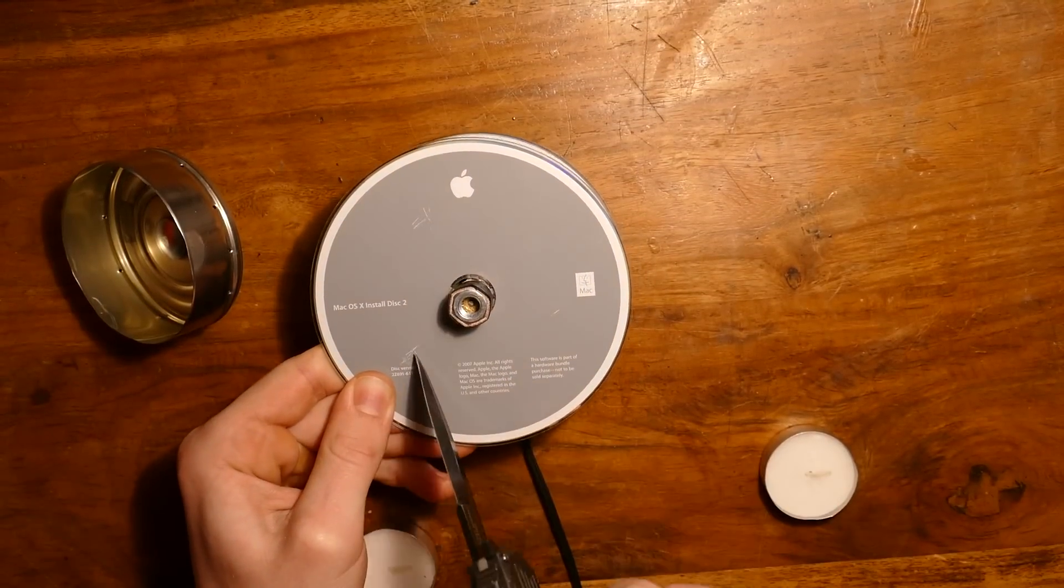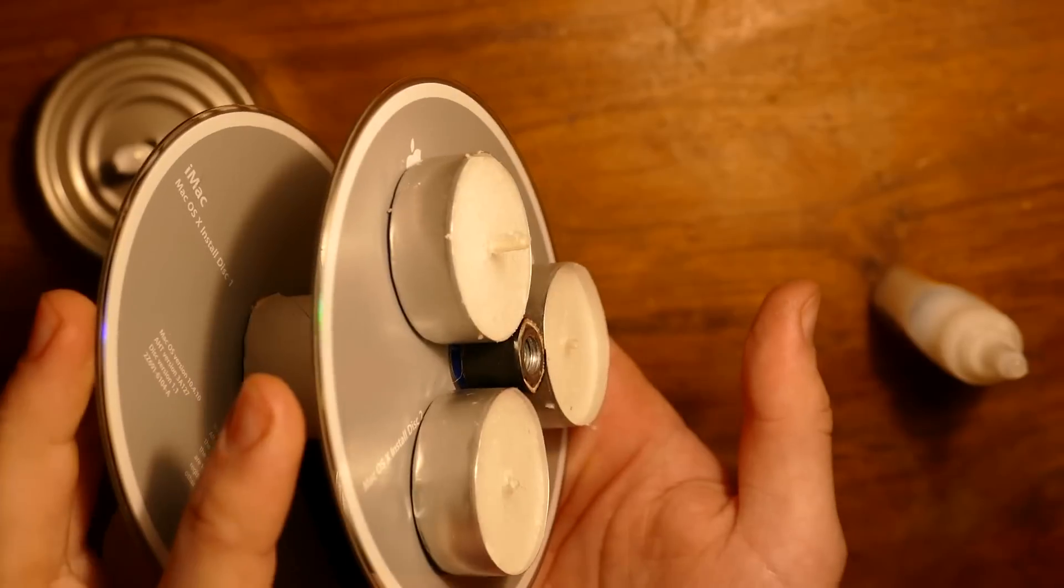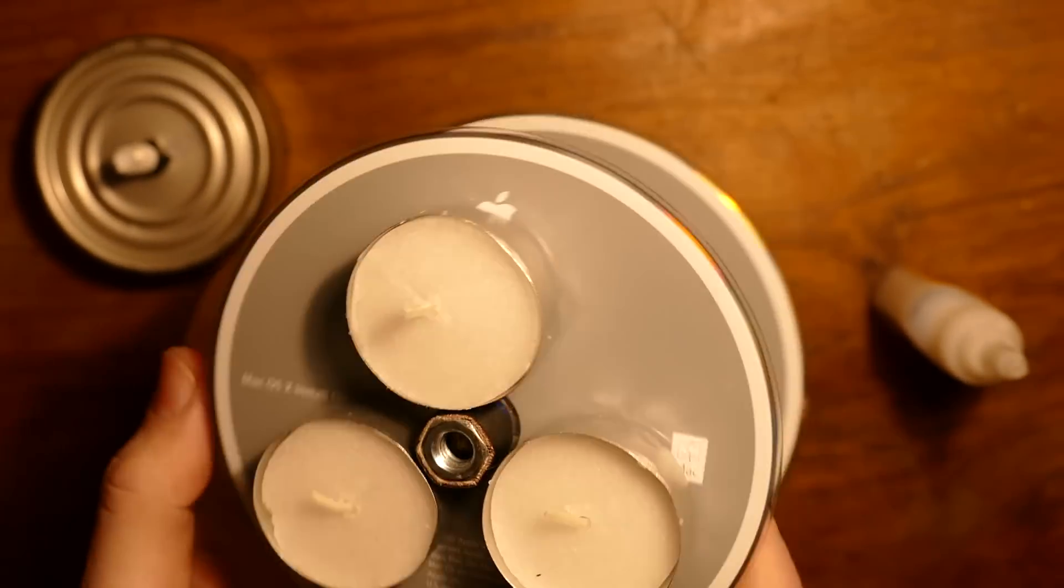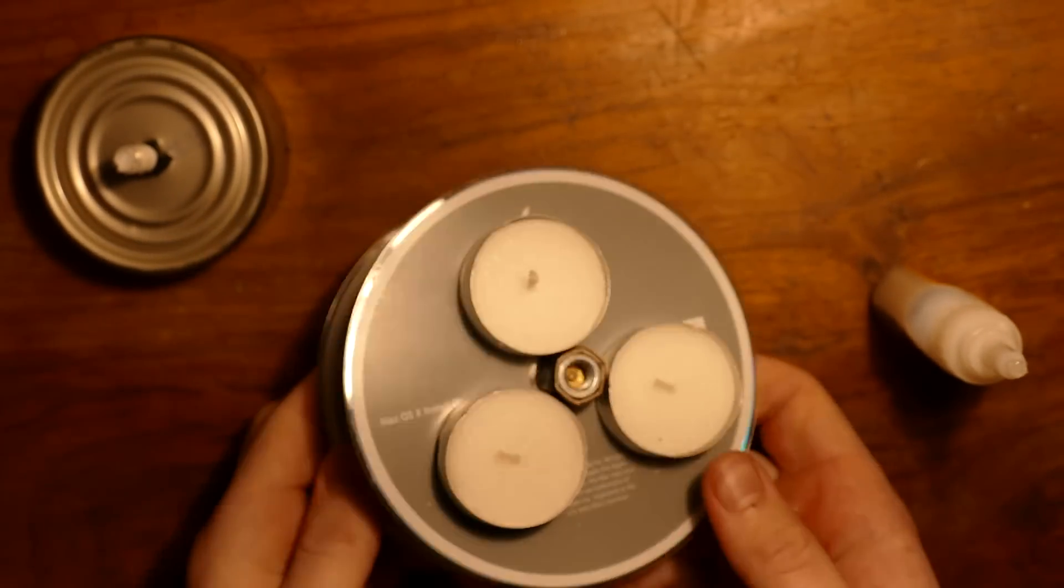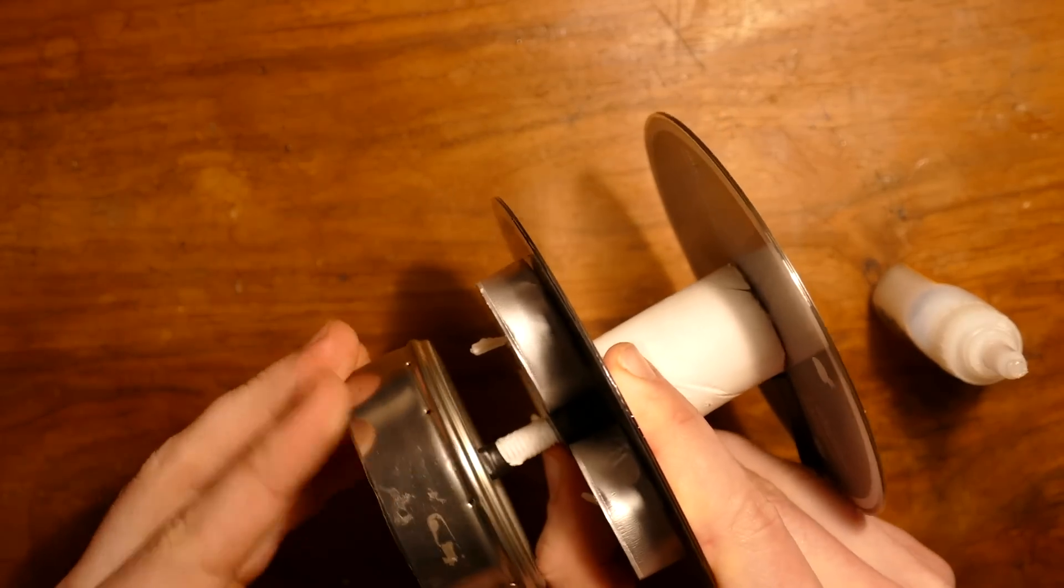Now scratch up the top of the CD, and the bottom of the candles, and then glue the candles to the CD, like this. The scratches make for a better glue bond. Next screw in the bolt to the nut. I added some Teflon tape to prevent the bolt from wobbling around, but that's optional.